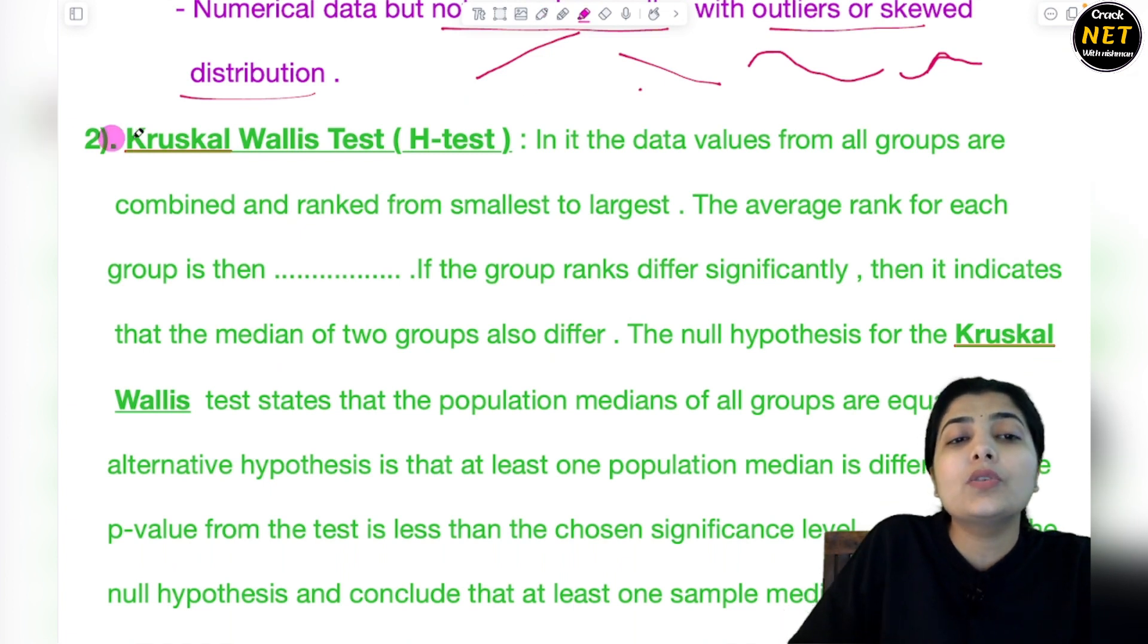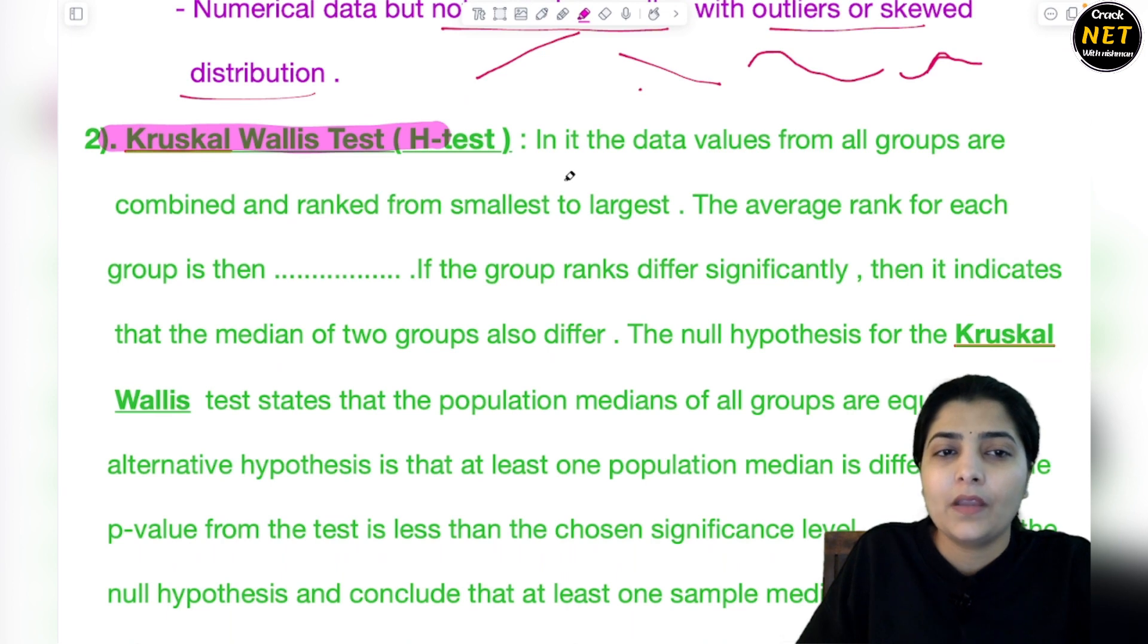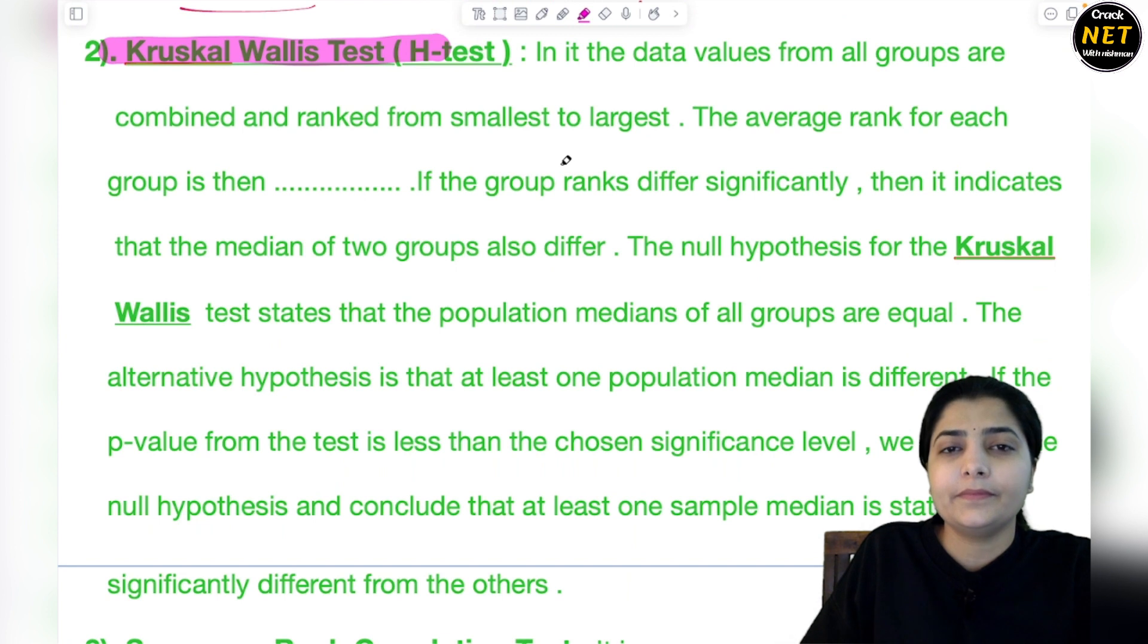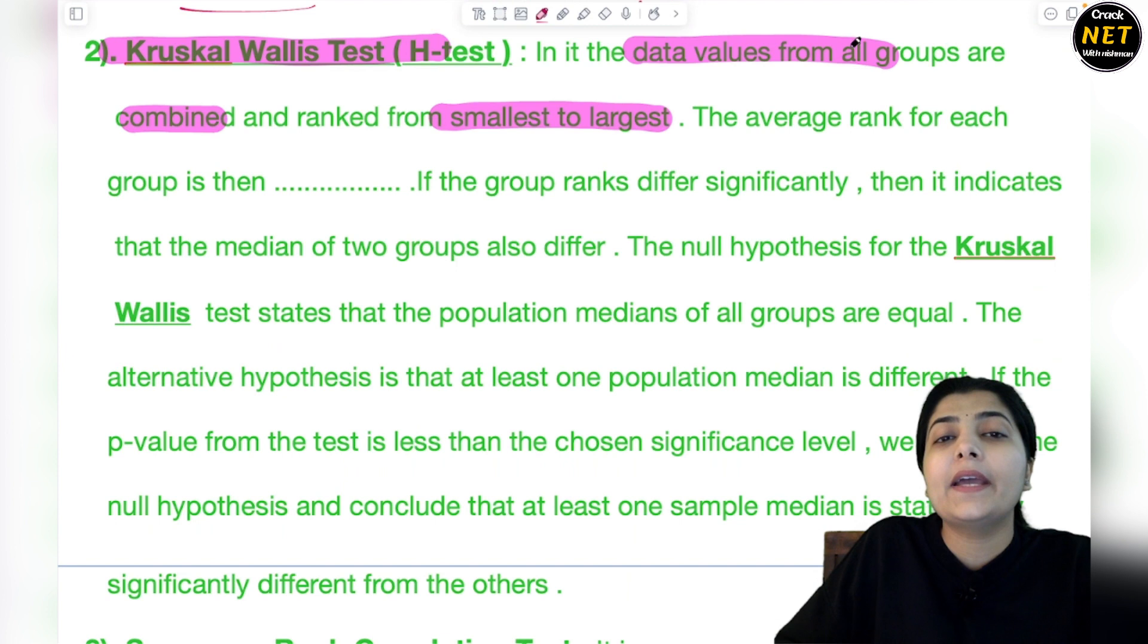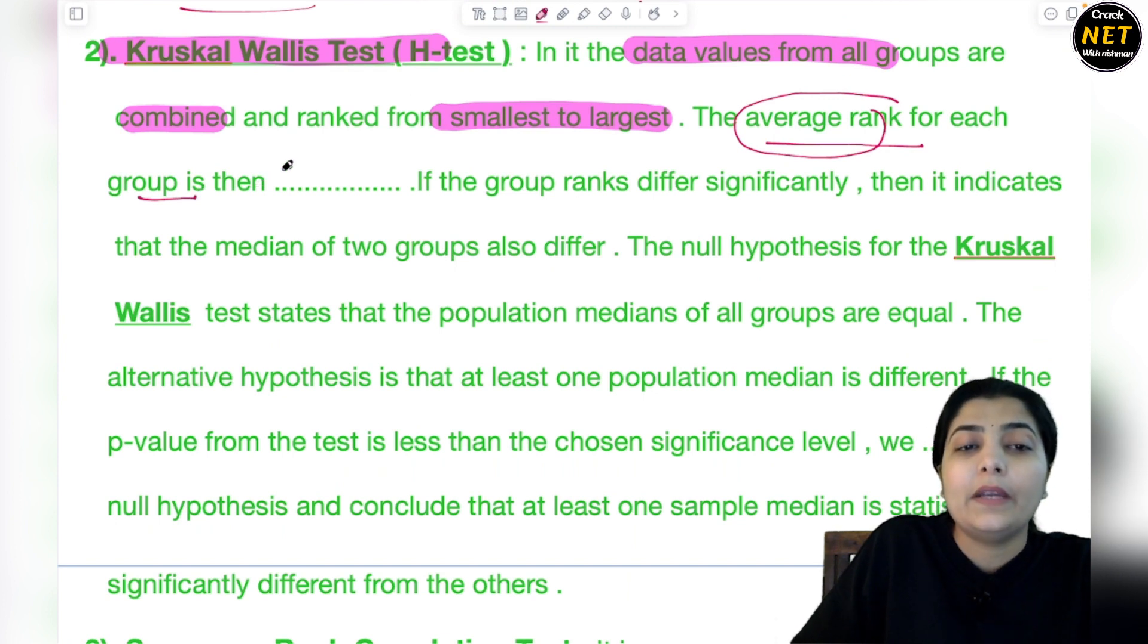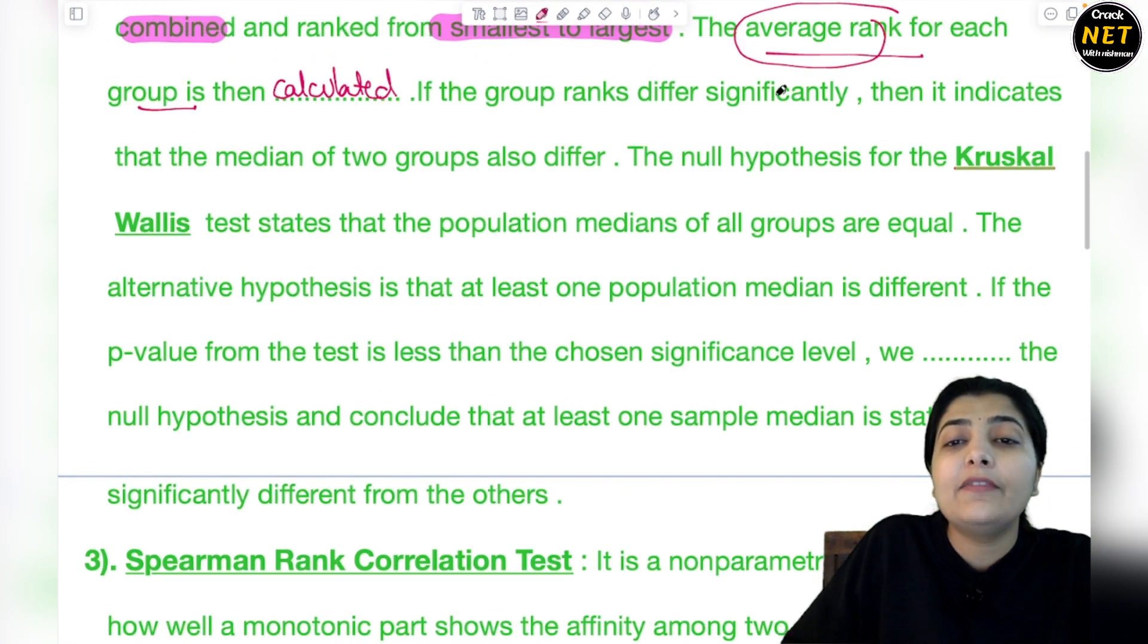The next one is Kruskal Wallis Test, which we also call H-test. Listen very carefully. Kruskal Wallis test - the data values from all groups are combined and ranked from smallest to largest. Here, the average rank for each group is then calculated. You can see the difference yourself from the previous test.